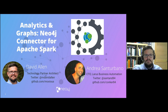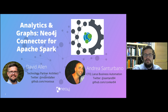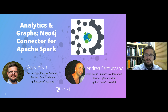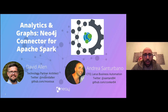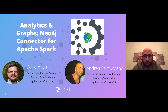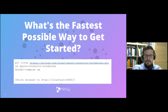Thank you, Lance, for that introduction. I am David Allen, a technology partner architect here at Neo4j, and my job happens to be a lot of fun because I get to play with Neo4j in combination with all of these different technologies. Today we're going to talk about our new Neo4j Connector for Apache Spark and all the different things it can do. With me today I have one of our good partners from Laris. Andrea, would you like to introduce yourself? Hi everybody, I'm Andrea Santurbano. I'm CTO at Laris Business Automation, which is an Italian prime partner of Neo4j, and we are who built the Neo4j Spark Connector. I hope you enjoy the presentation and that you are all safe in these hard times.